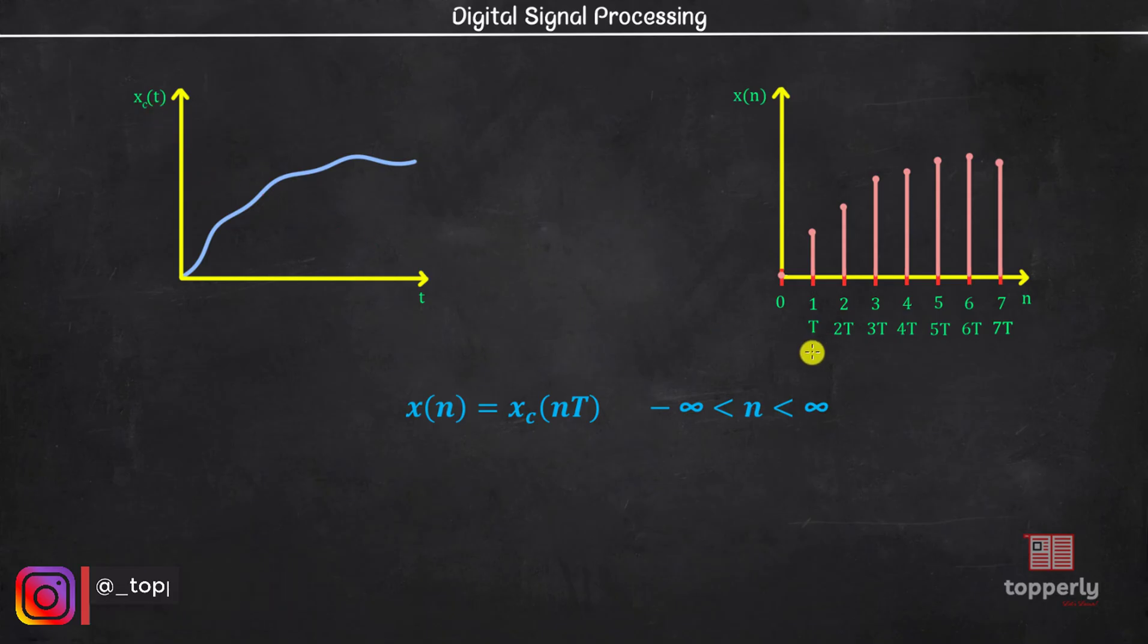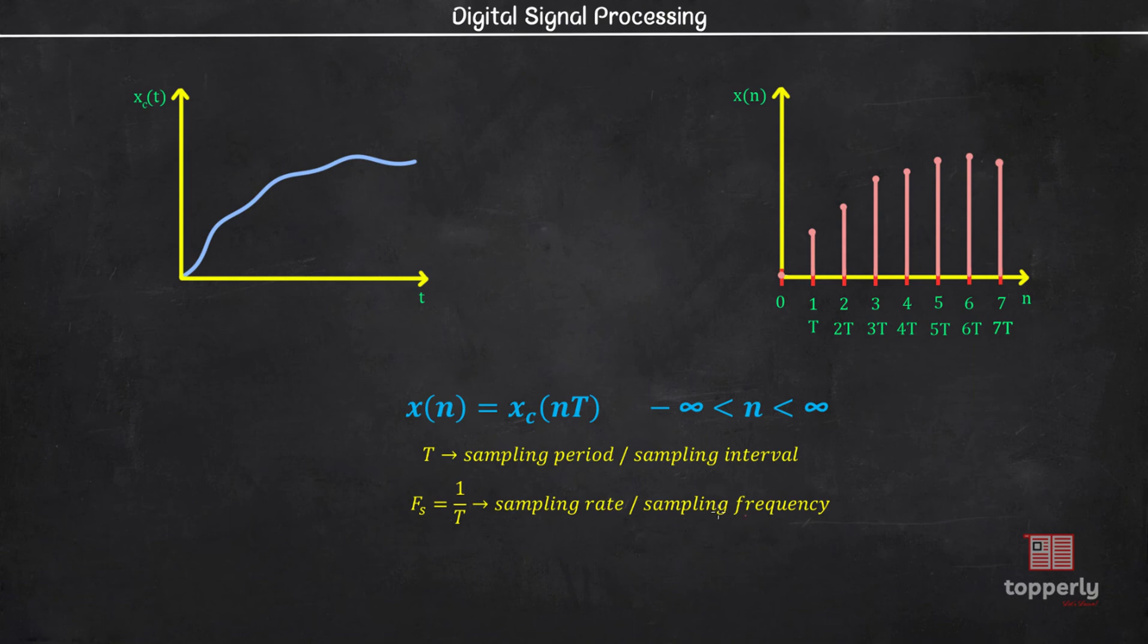Here the time interval between successive samples denoted by capital T is called the sampling period or sampling interval. The reciprocal of the sampling period, 1 by T, is equal to Fs, where Fs is the sampling rate or sampling frequency.